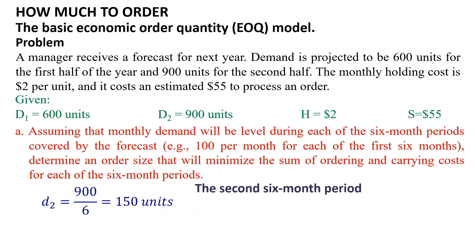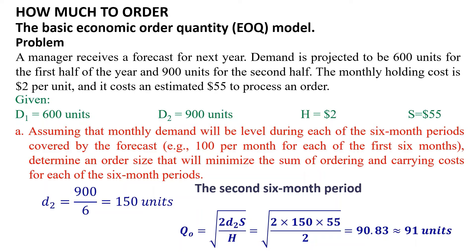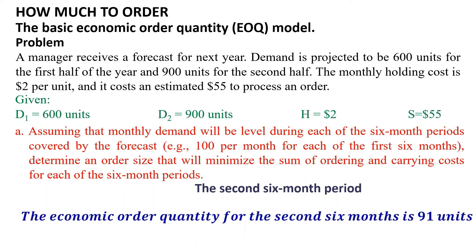For the second six-month period, the monthly demand D2 equals 900 divided by 6, equals 150 units. Q0 equals the square root of 2 multiplied by D2 multiplied by S divided by H, which equals the square root of 2 multiplied by 150 multiplied by 55 divided by 2, equals 90.83, approximately 91 units. So the economic order quantity for the second six months is 91 units.